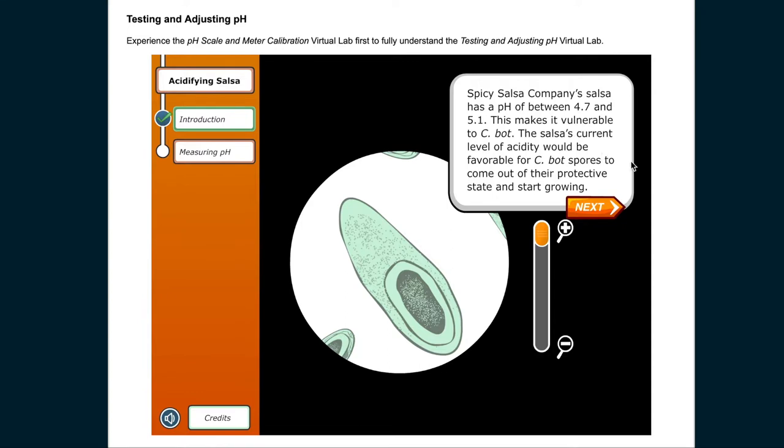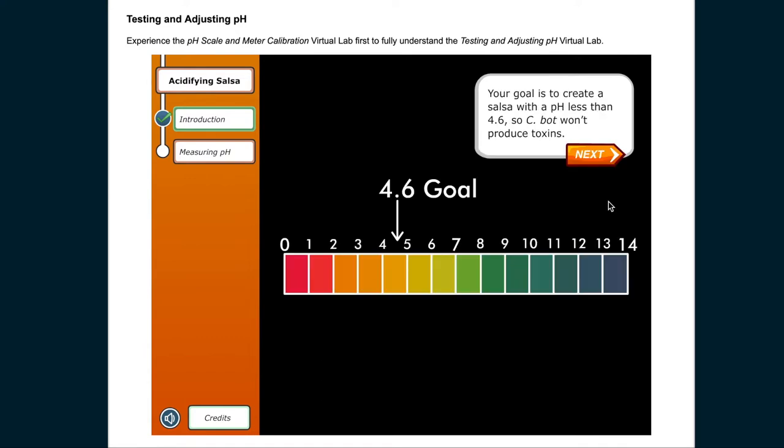Spicy salsa company salsa has a pH of between 4.7 and 5.1. This makes it vulnerable to CBOT. The salsa's current level of acidity would be favorable for CBOT spores to come out of their protective state and start growing. Your goal is to create a salsa with a pH less than 4.6 so CBOT won't produce toxins.